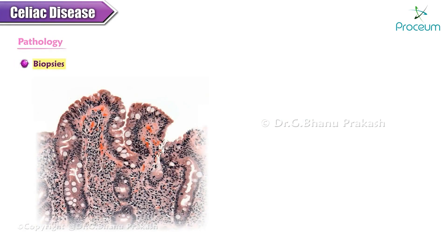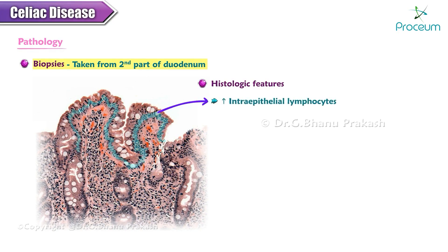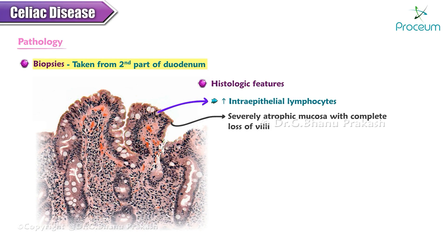Biopsies are usually taken from the second part of the duodenum. Histologic features of celiac disease in the small intestine range from mild alteration characterized only by increased intraepithelial lymphocytes to a severely atrophic mucosa with complete loss of villi, enhanced epithelial apoptosis, and crypt hyperplasia.